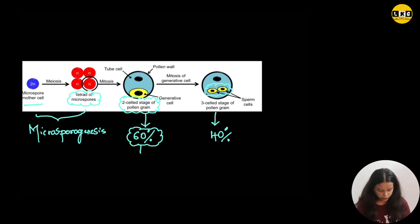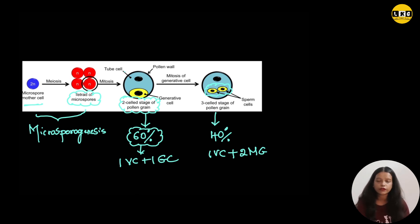So, 60% of the angiosperms are released in two-celled stage which are one vegetative cell and one generative cell. And 40% are released in three-celled stage which is one vegetative cell plus two male gametes.